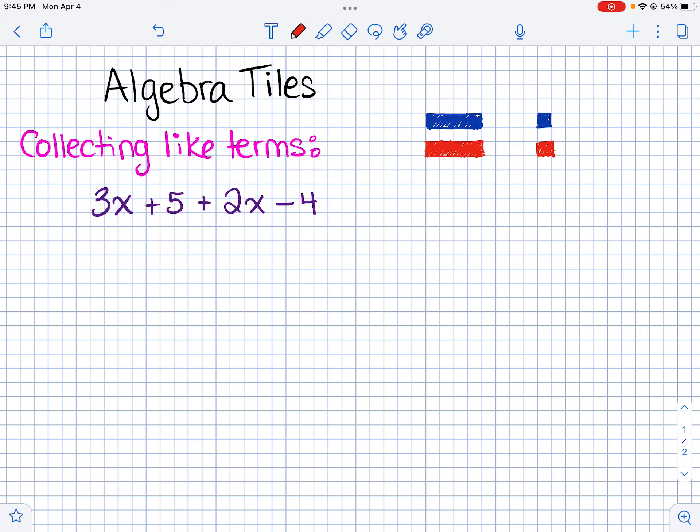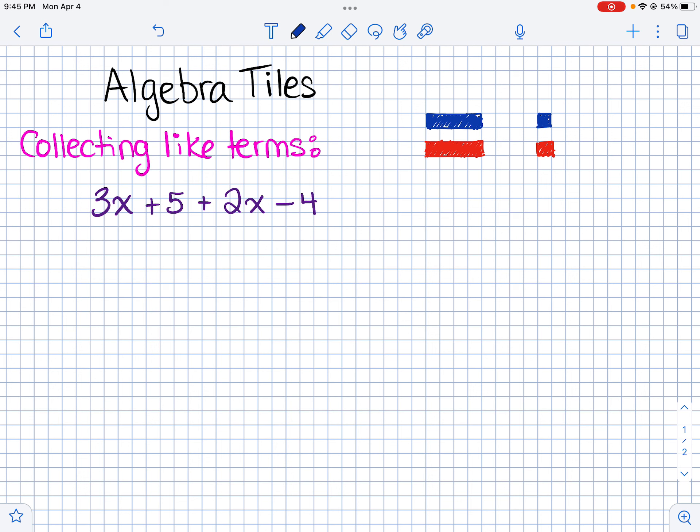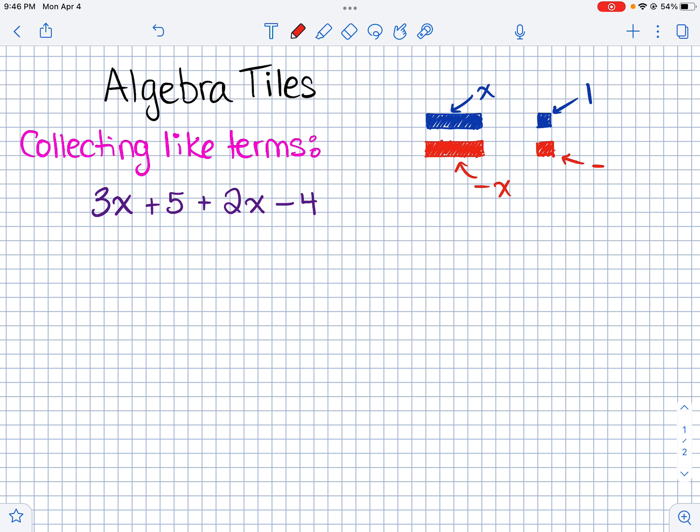All right, this is a video on algebra tiles and how to use them. So I'm going to use these four tiles here. I'm going to call this long rectangular blue one an X tile. And the red one that looks the same size and shape is going to be a negative X tile. And then this single blue guy here is just going to represent a constant, like a one, and the red guy is going to represent a negative one.